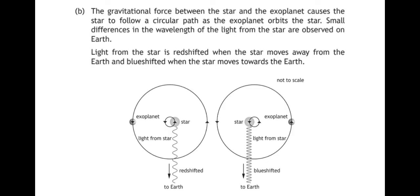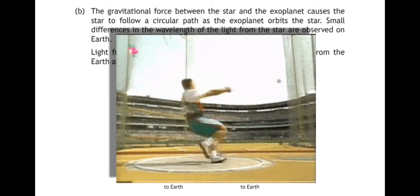The gravitational force between the star and the exoplanet causes the star to follow a circular path as the exoplanet orbits the star. Small differences in the wavelength of light from the star are observed on Earth. So, this is something that happens. The gravitational pull of the exoplanet as it goes round pulls the star towards it as it goes round and causes the star to sort of wobble back and forth.